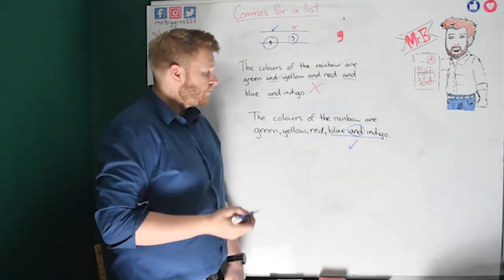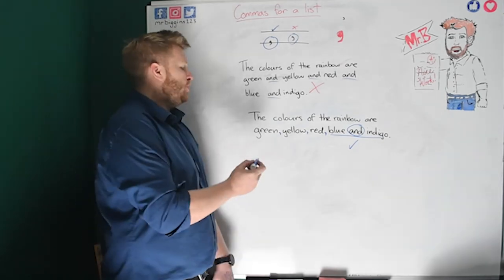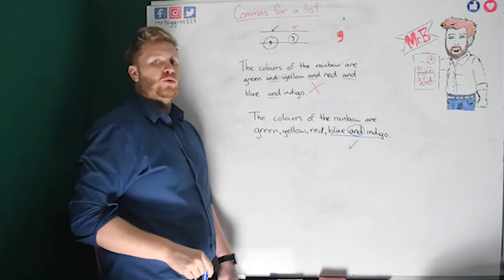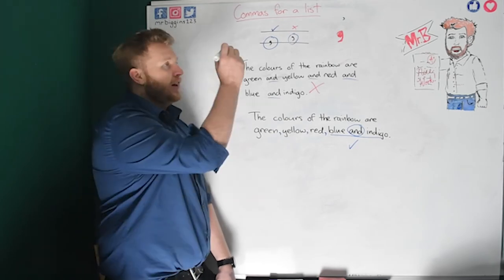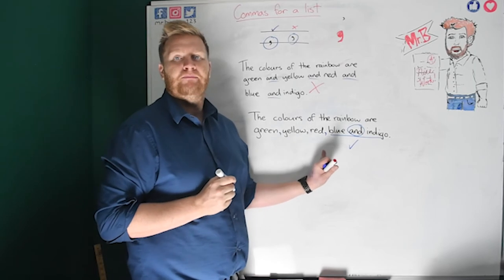So, when you're writing a list with more than two items, because if you've only got two, you could have said, the colours of my car are blue and indigo. That would be fine. You don't need commas. If there's more than two items in the list, you should be using commas. You should be doing a little full stop with a tail on the line in between each item.